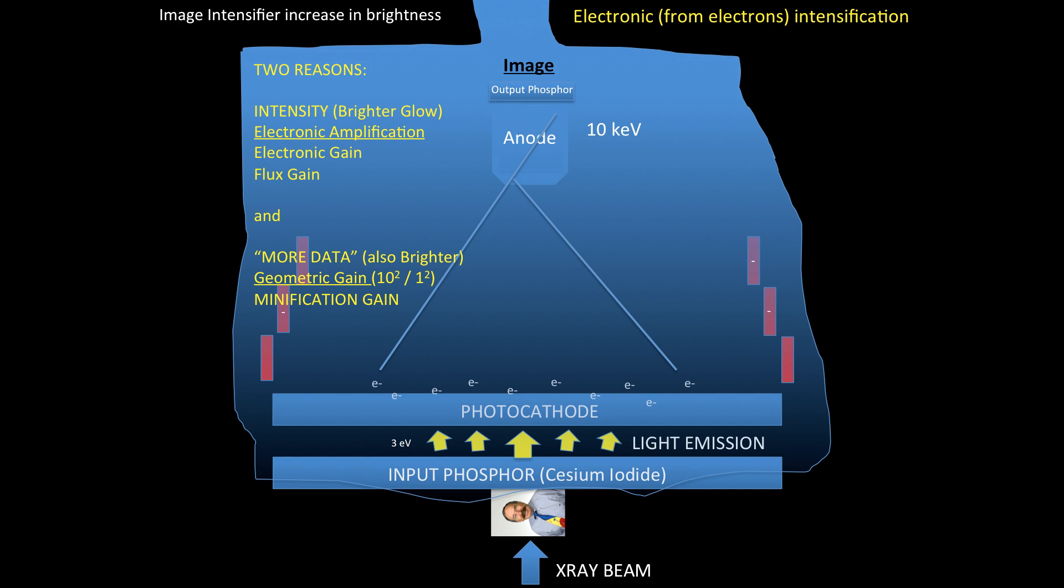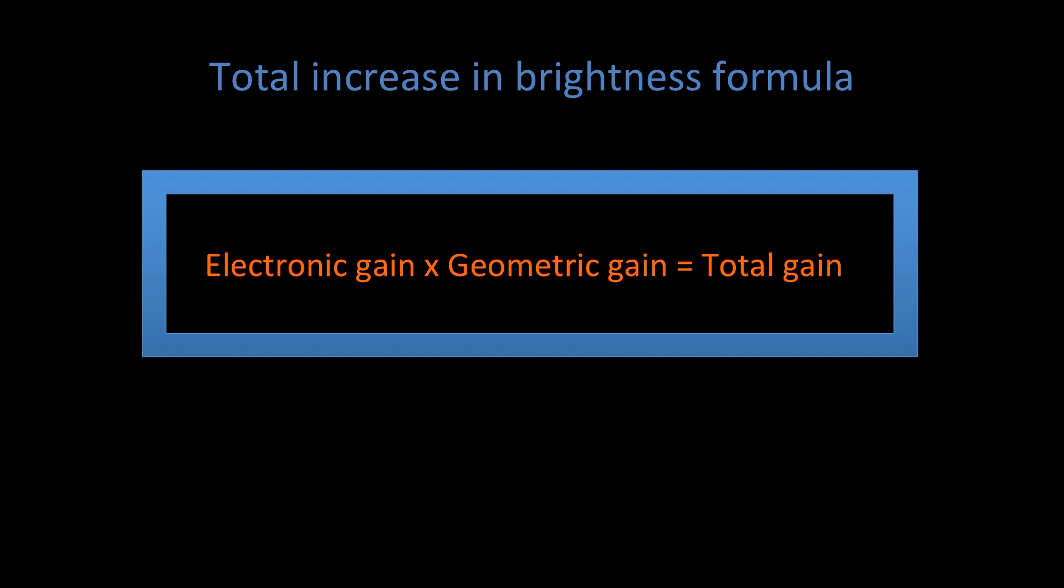In conclusion, you have a total increase in brightness that's created by the image intensifying tube. That formula, or that total gain, is given by the electronic gain times the geometric gain, and that's how you calculate the total gain due to the image intensifier tube.